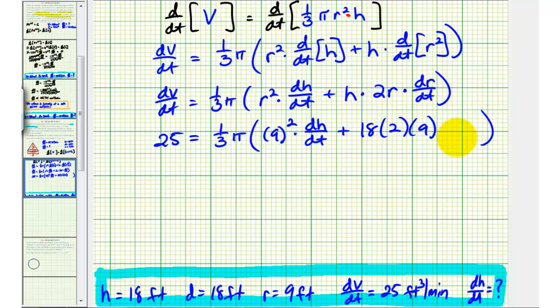We need to think about dr/dt for a moment. Remember we were told the height and diameter were always equal to each other, and we know that the radius is always half the diameter, and therefore the radius is also always half the height.